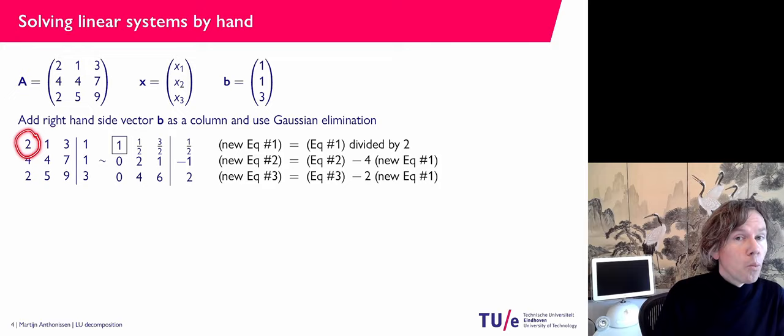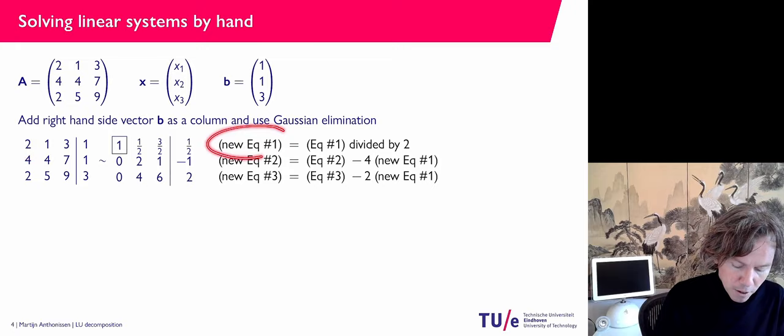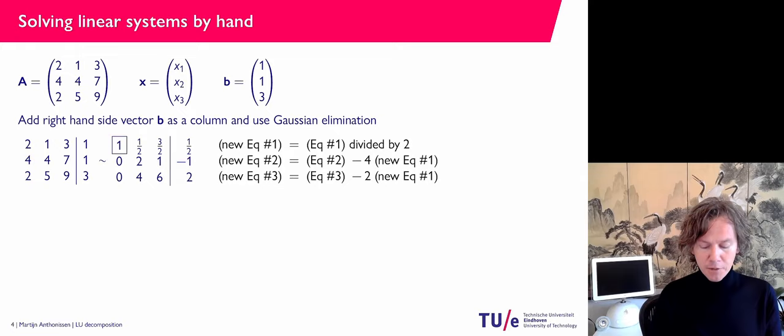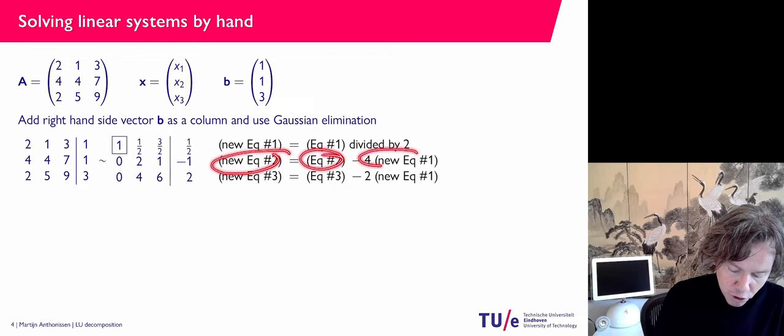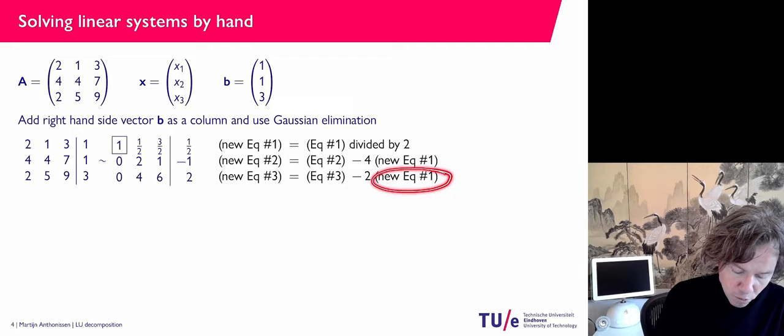I look at the first row: I would like this two to become a one, so I divide everything by two. Then I use that new first equation to create a zero in the second row and a zero in the third row. The new second equation is the old one minus four times the new first equation, giving a zero there. For the third equation, I subtract twice the new first equation, creating a zero there as well.